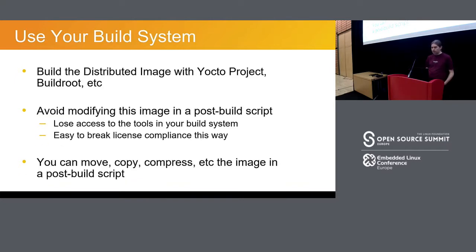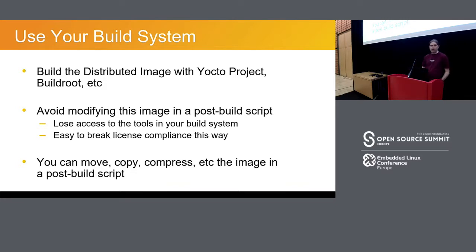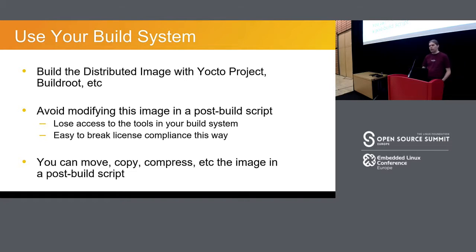Use the build system as far as you can, whether that's the Yocto project, BuildRoot, or anything else. Try to avoid writing a post-build script that unpacks your image, throws more software in it, and repacks it. I've seen that done quite a few times, and when that happens you lose access to the tools in the Yocto project and BuildRoot to do license compliance and auditing. It's very easy to inject additional open source license content in a post-build script and not have it captured when you're grabbing things for license compliance.